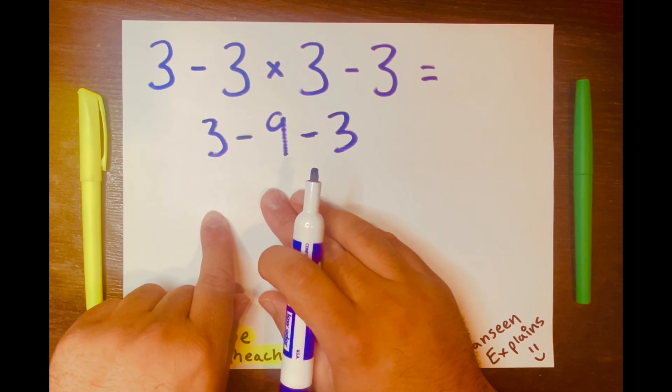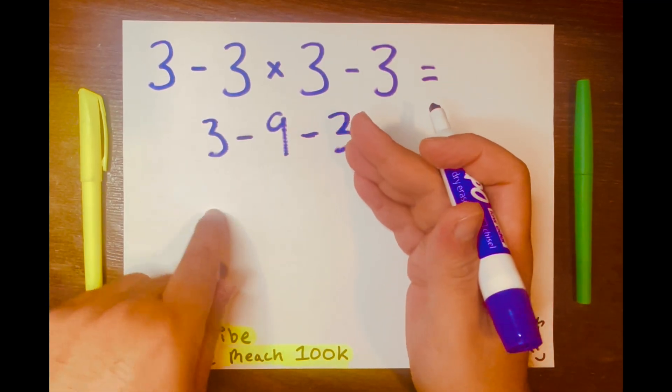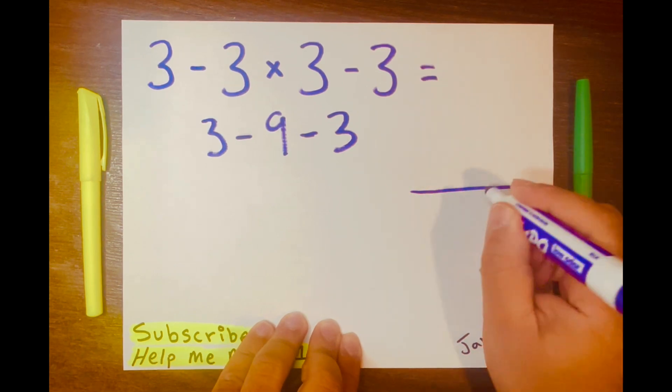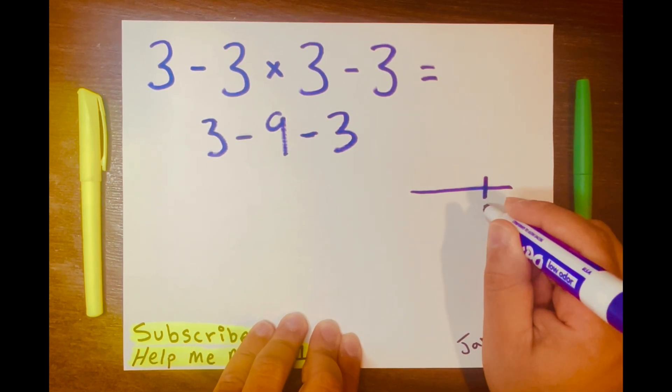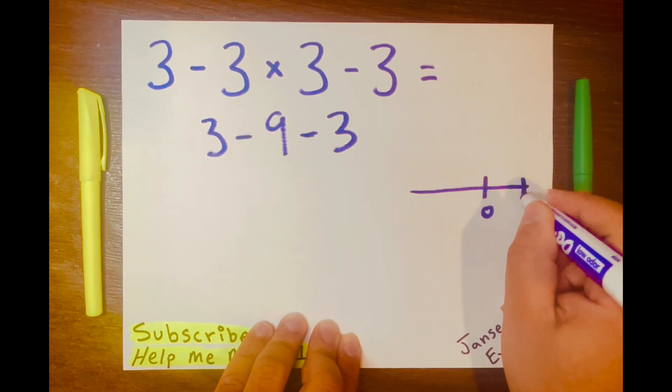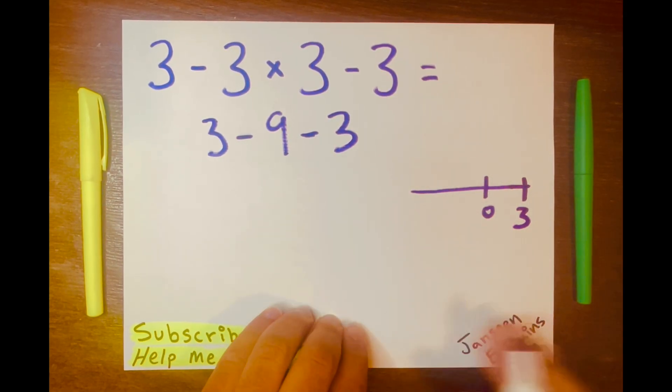So 3 minus 9 is what? Think about it. So here's the number line, and you start at, let's put a 0 there, and this is 3, right?